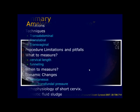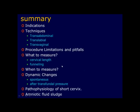In summary, we have covered: indications for cervical evaluation; ultrasound techniques — transabdominal, translabial, and transvaginal — including the procedures, advantages, and disadvantages of each; what to measure — cervical length and funneling, normal versus abnormal; when to measure; dynamic changes, spontaneous or after fundal pressure; pathophysiology of short cervix; and amniotic fluid sludge. Thank you.